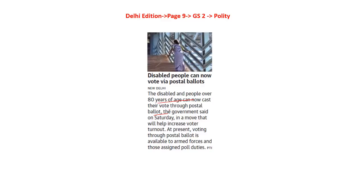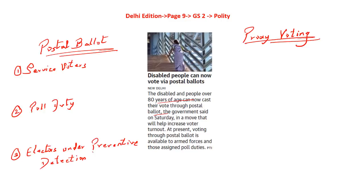In case these people are not given a provision for voting, we are violating their constitutional right to vote. The option available is the postal ballot, and the other is proxy voting. In the present scenario, there are three types of people who can use the postal ballot: service voters, polling duty officials, and electors under preventive detention.